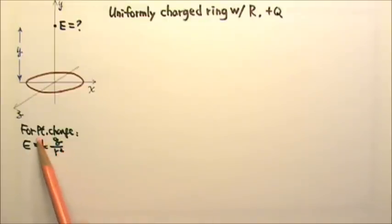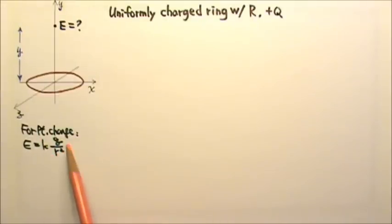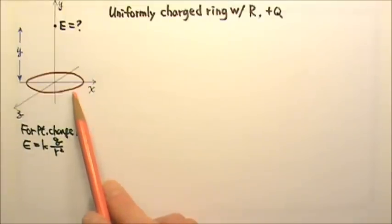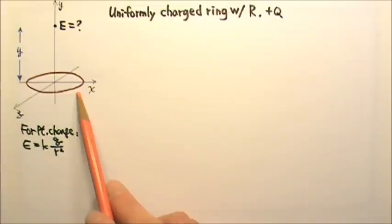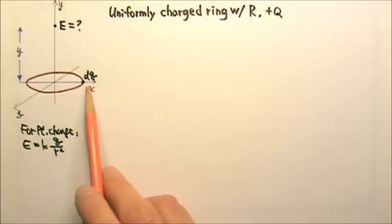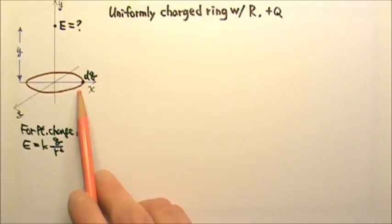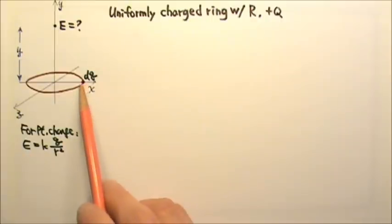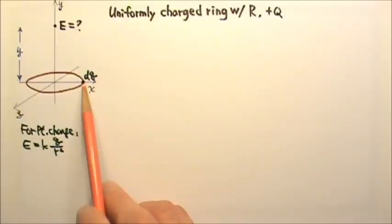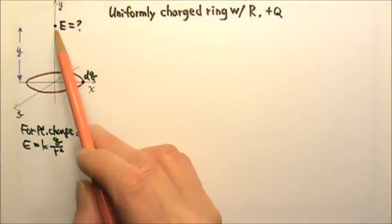We know that the field produced by a point charge can be found using Coulomb's law: E equals kq over r squared. However, this ring of charge is not a point charge. We have to chop this ring of charge into extremely small pieces. For example, this little bit of charge dq on the ring is a point charge, so we know how to find the electric field produced by this point charge at that location.